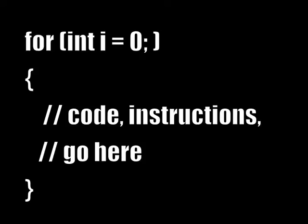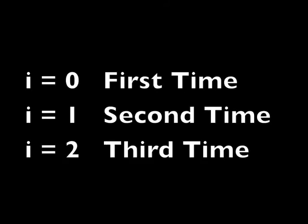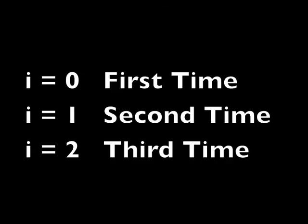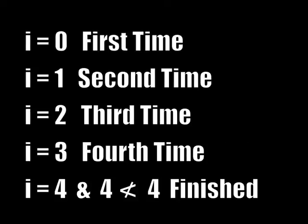We need to start with an integer — I call it i — and we need to start at zero. That's where programmers start counting. The next step is to say how high we want to go up. We can accomplish this by saying i is less than four. Finally, we need to tell it to add one every time — that is what i++ means. If we want to go exactly four times, remember we're starting to count at zero: zero is the first time, i equals one is the second time, i equals two is the third time, i equals three is the fourth time. When we add one again, i is four — four is not less than four, and it means we're finished. We leave the loop.